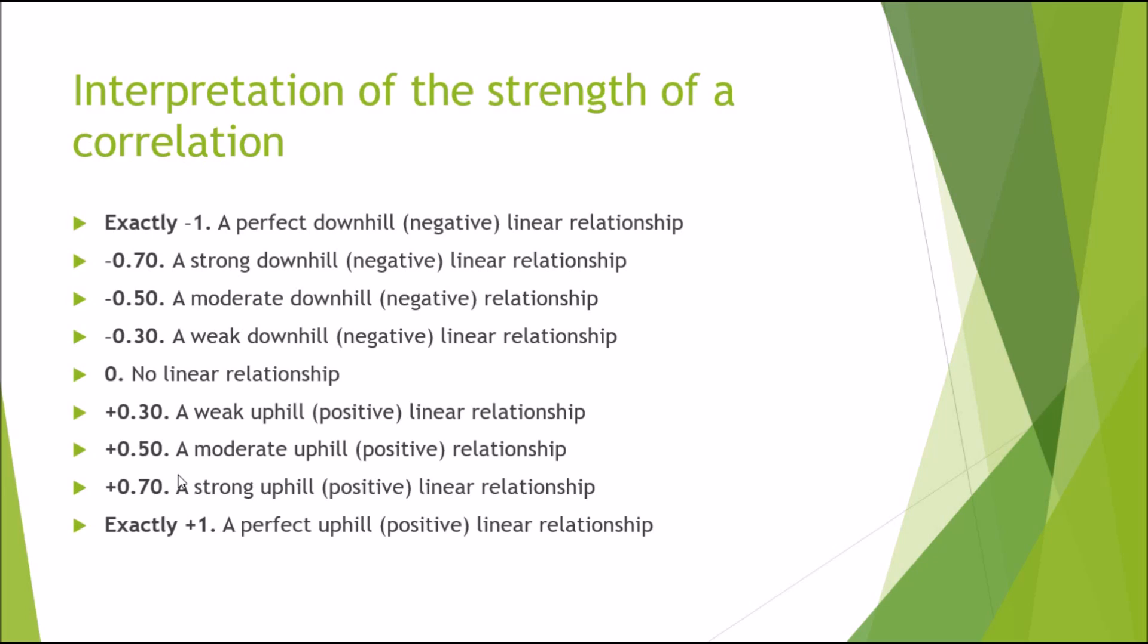When you go into the positives, it's the exact same interpretation. But instead of a negative, it's a positive relationship. 0.3 would be a weak positive linear relationship. 0.5 would be a moderate positive relationship. And 0.7 would be a strong positive relationship. And one exactly would be a perfect positive linear relationship.